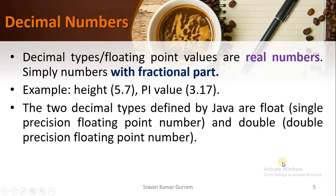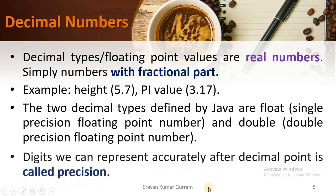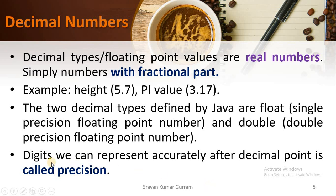The two decimal types defined by Java are float and double. Float is used to store single precision floating point numbers, and double is used to store double precision floating point numbers. You may wonder: what is precision? Digits we can represent accurately after the decimal point is called precision — in other words, how many digits after the decimal point we can represent.